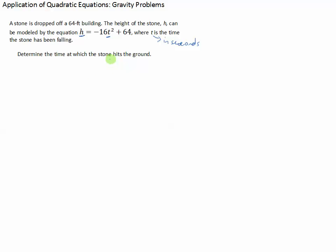But if you think about it, what does it mean when the stone hits the ground? Well, that tells us the height of the stone is 0. Okay, so it's just a tricky way of telling us that h is 0.